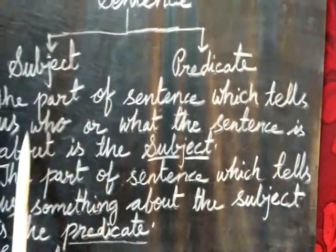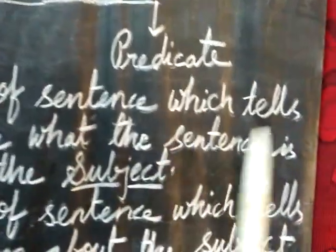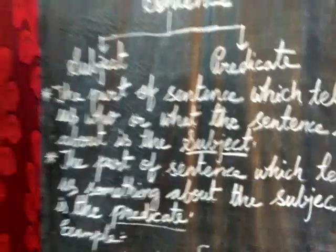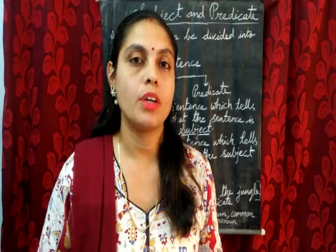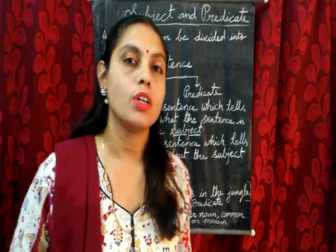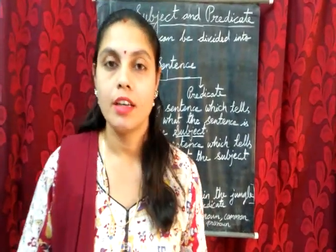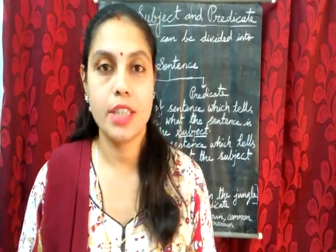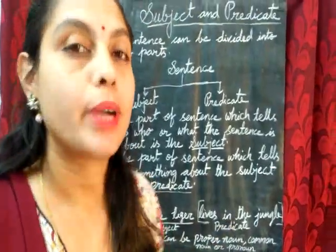The part of a sentence which tells us who or what the sentence is about is the subject. In every sentence, we are talking about someone or something, and about whom or what we are talking is the subject. The rest of the part is the predicate.